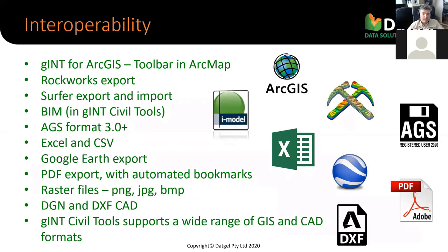Gint can connect with many other products. There's an add-in to ArcMap, exports to Rockworks and Surfer, import/export from Surfer, and BIM data through Gint Civil Tools. Very importantly, AGS format is supported — AGS3, AGS4, AGS 3.1, and AGS RTA. Also Excel, CSV, a built-in PDF exporter where you can control bookmarks, and any Gint report can be exported to DXF, DGN, and raster files.